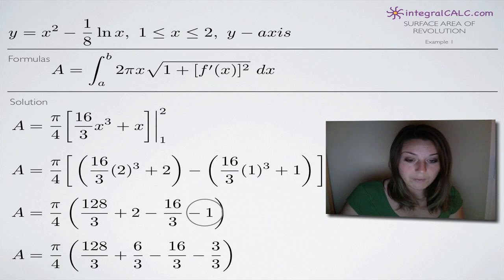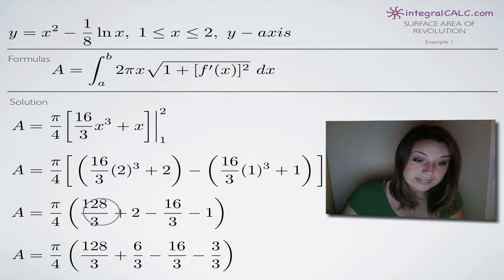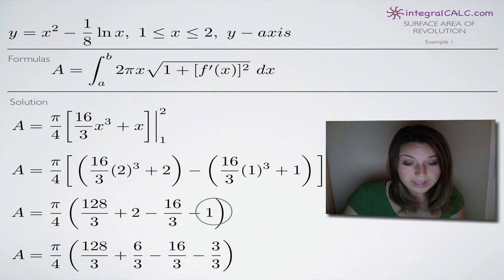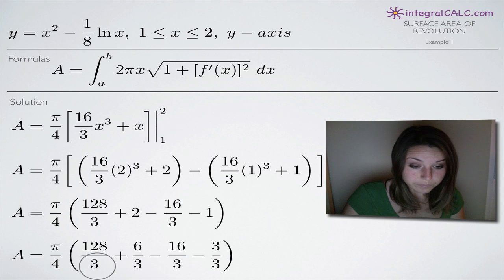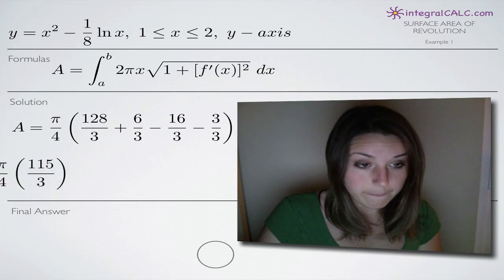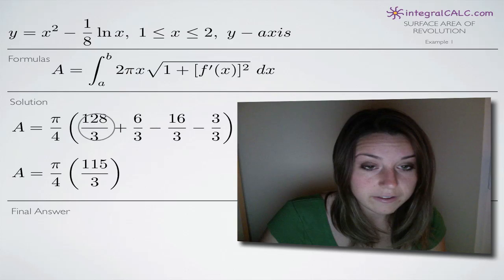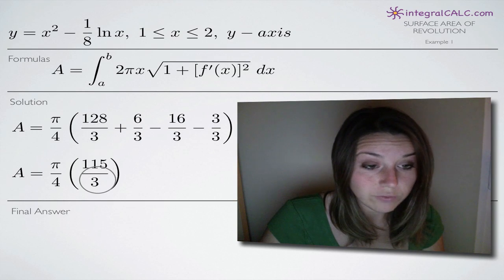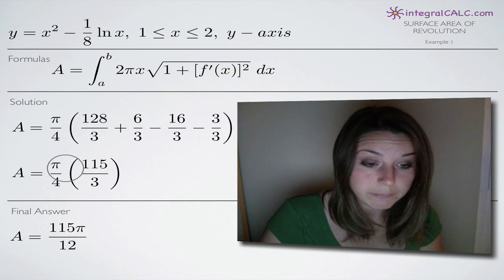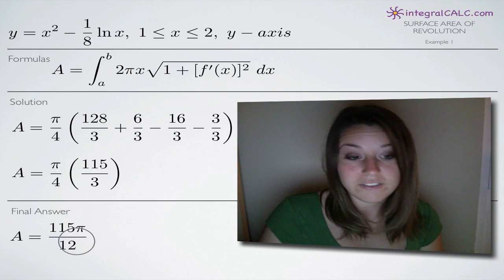We want a clean fraction, so we find a lowest common denominator inside the parentheses. Multiplying 2 and negative 1 each by 3 over 3 gives us positive 6 thirds and negative 3 over 3. Combining all the fractions, we end up with 115 over 3. Multiplying by pi over 4 gives us a final answer of 115 pi divided by 12.